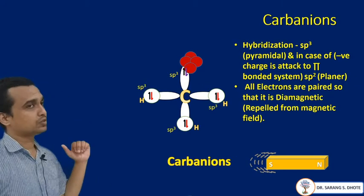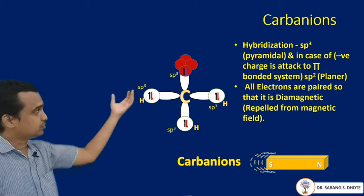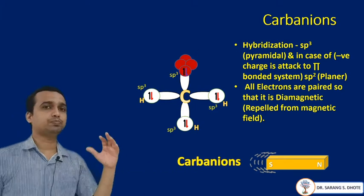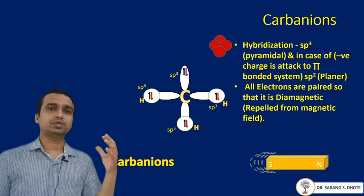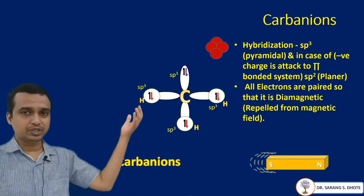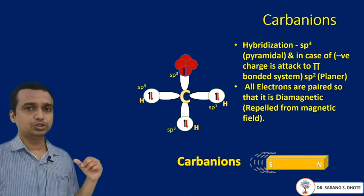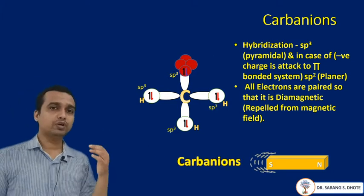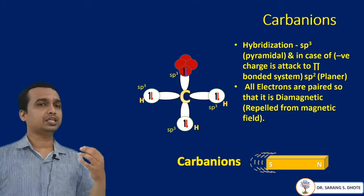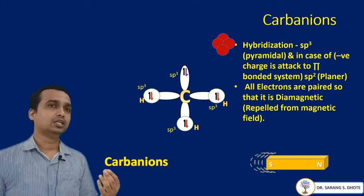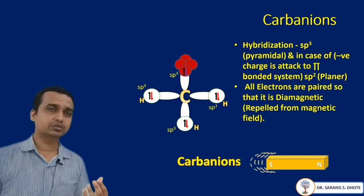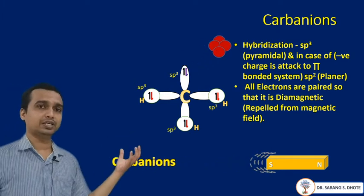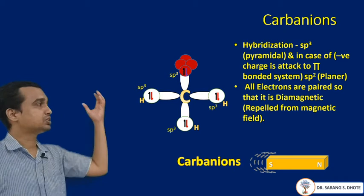Now, the properties of carbanions. The hybridization of a carbanion is sp3, so the geometry is pyramidal in shape. But in some cases where a pi-bonded system is present, the hybridization is sp2 and the geometry will be planar. It is observed that all electrons are paired, and due to this pairing of electrons, the carbanion is diamagnetic in nature — similar to the carbocation. Both carbocation and carbanion are diamagnetic. Diamagnetism means the carbanion is repelled by the magnetic field due to the presence of all paired electrons.